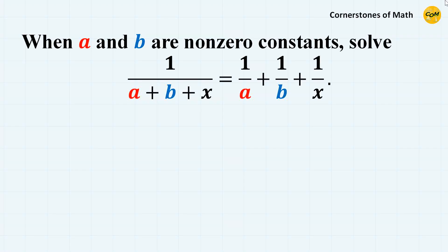Hello, and welcome to yet another video of Cornerstones of Math. Today, we will solve the following problem. When a and b are non-zero constants, solve the equation 1 over a plus b plus x equals 1 over a plus 1 over b plus 1 over x.